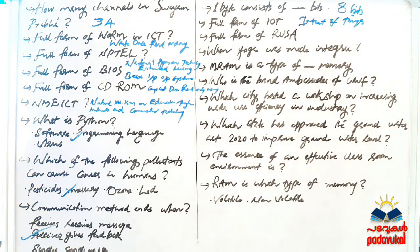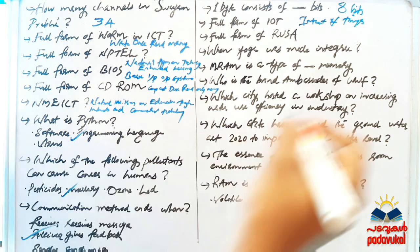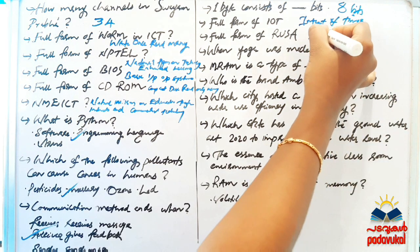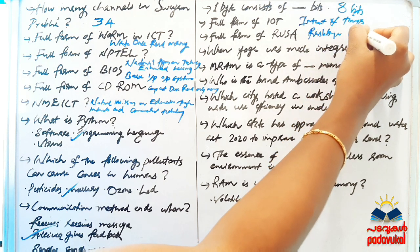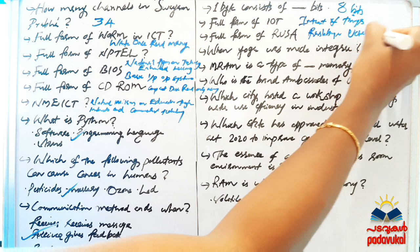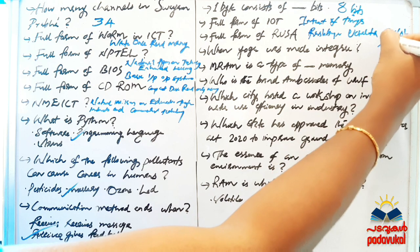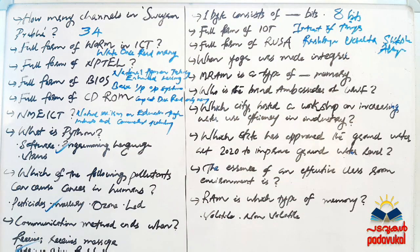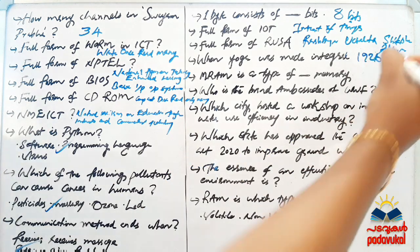The full form of RUSA is Rastriya Uchadar Shikshabhyan. Next question: when was yoga made integral? The answer is 1926.